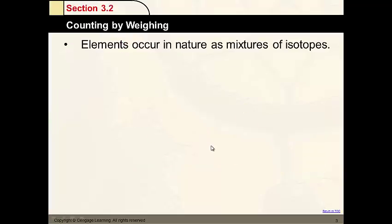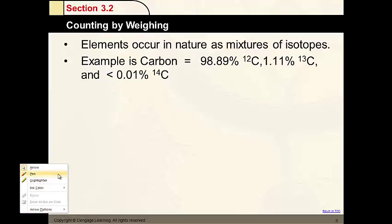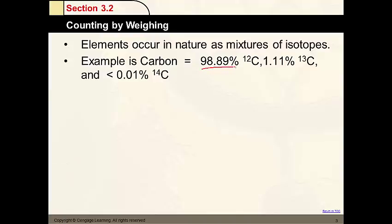We've also discussed that elements occur in a variety of different atomic structures with more or less neutrons — those are called isotopes. An example here is carbon. We have one variety of carbon that is far more abundant than others: carbon-12, with a mass of 12, is almost 99% abundant. We also have carbon-13, which is 1.11% abundant, and carbon-14 is so rare it's just trace amounts, so typically we just ignore those.